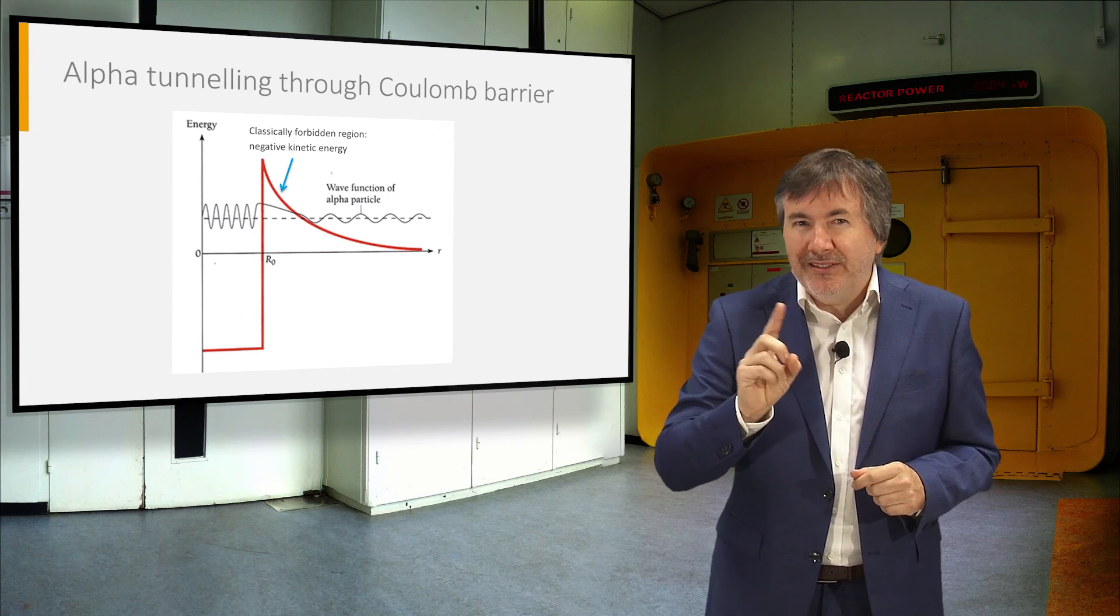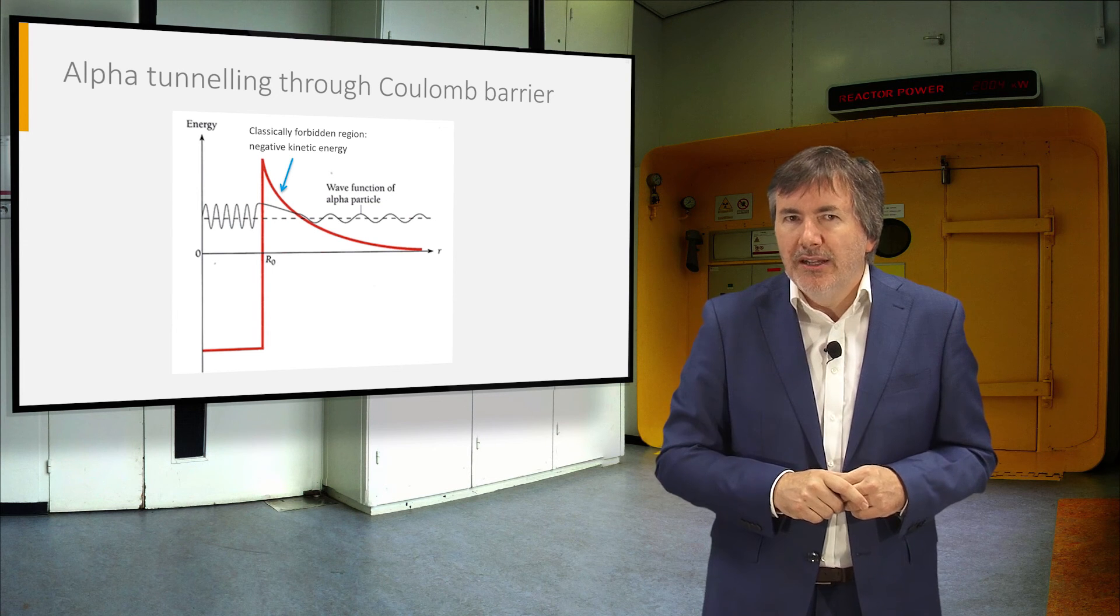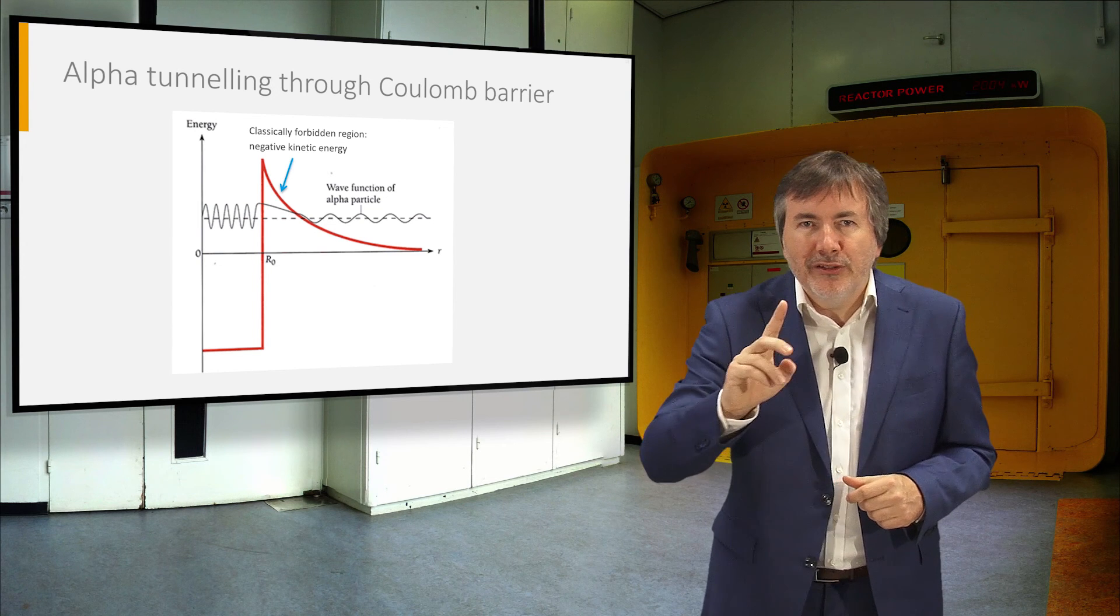In classical physics, an alpha particle cannot escape from the nucleus because of the Coulomb barrier. In quantum mechanics, it is possible to tunnel through the barrier.